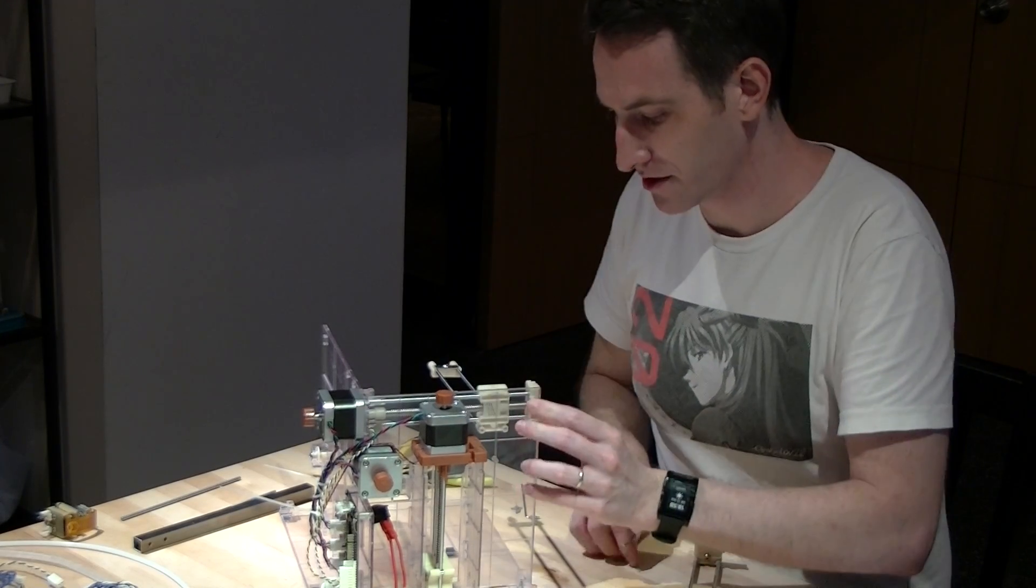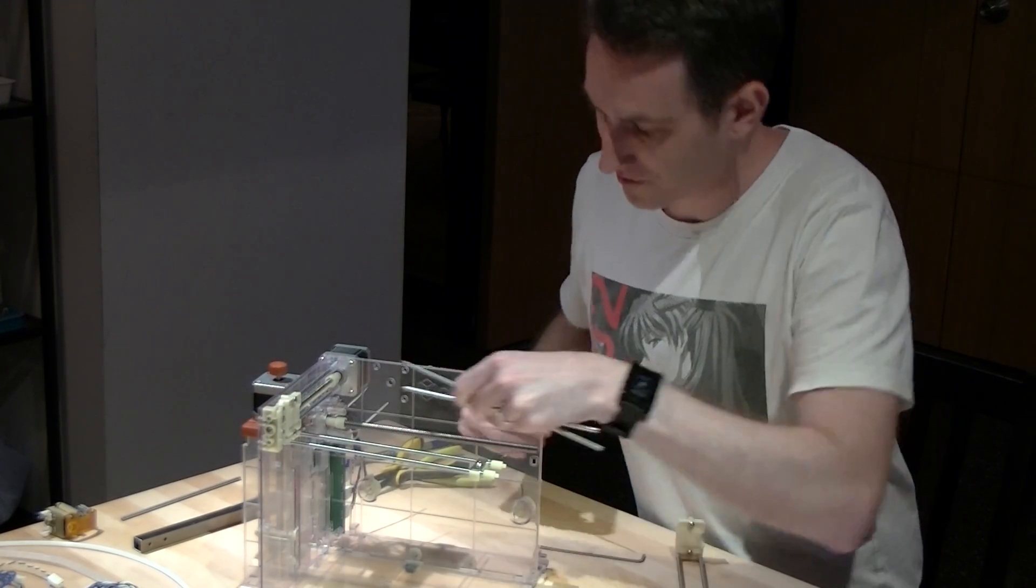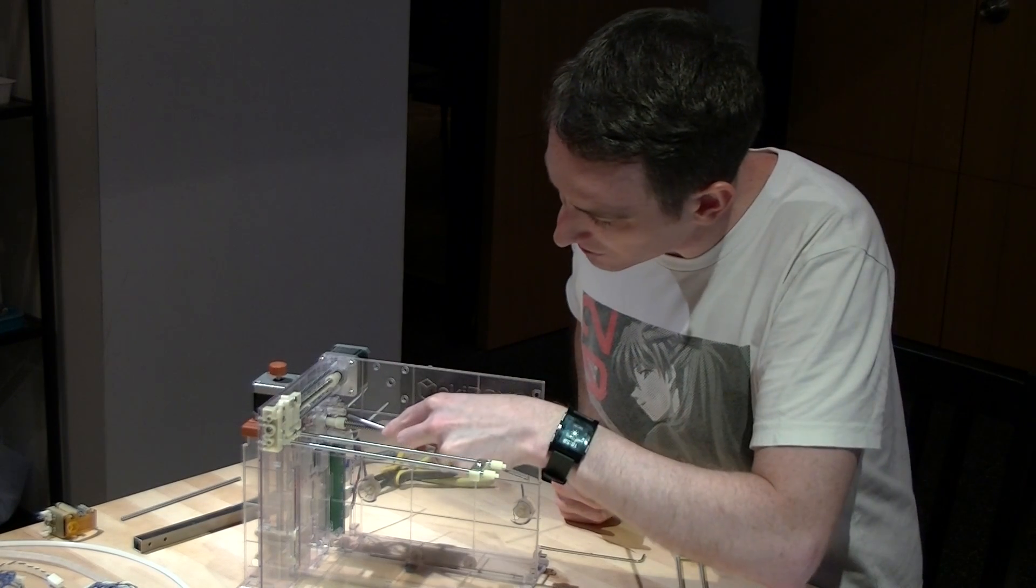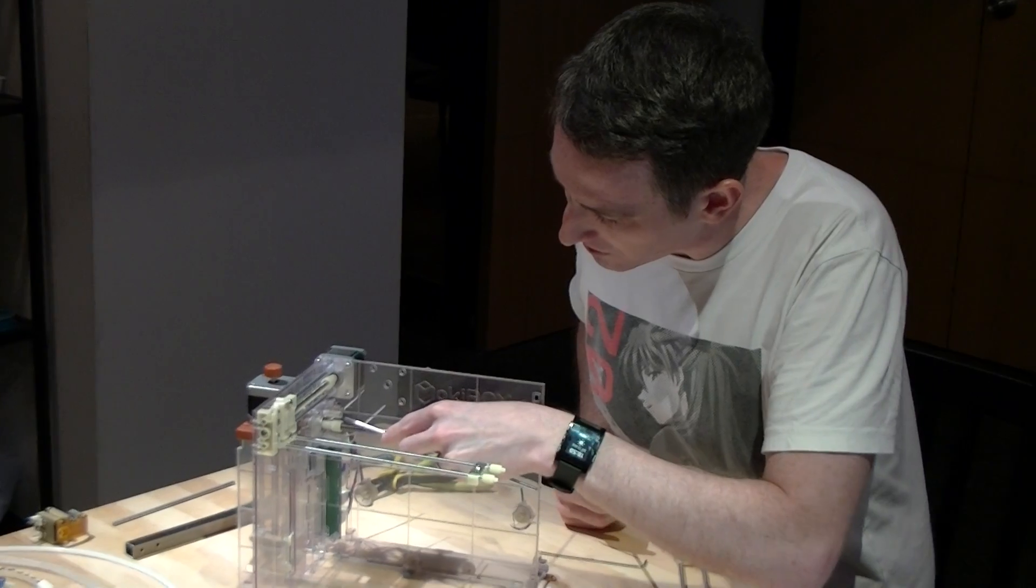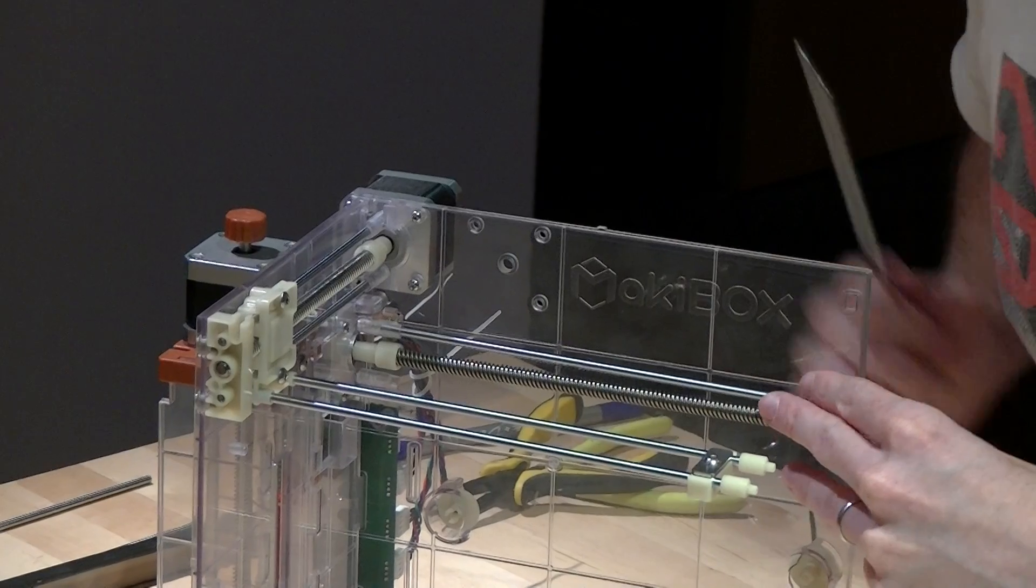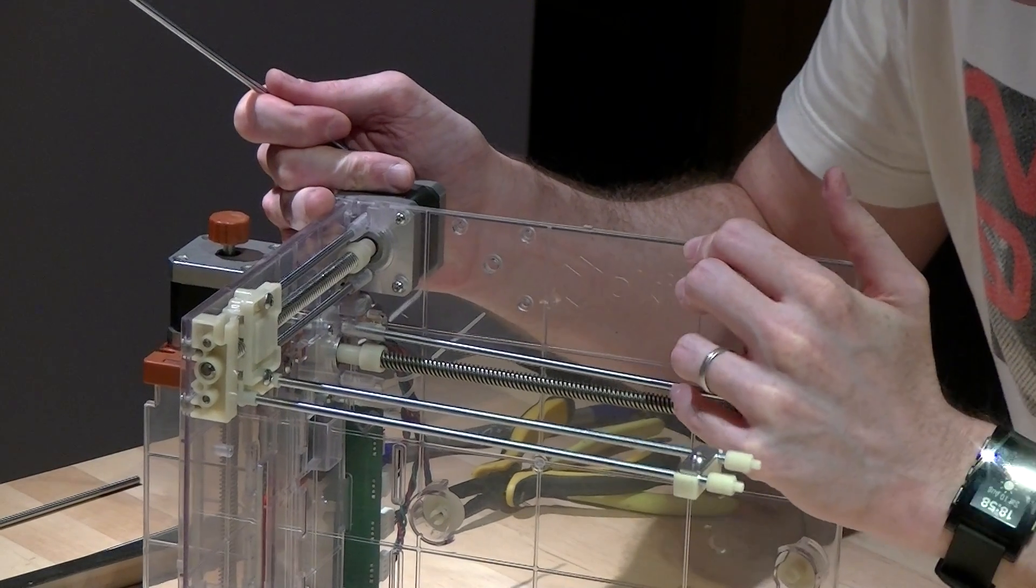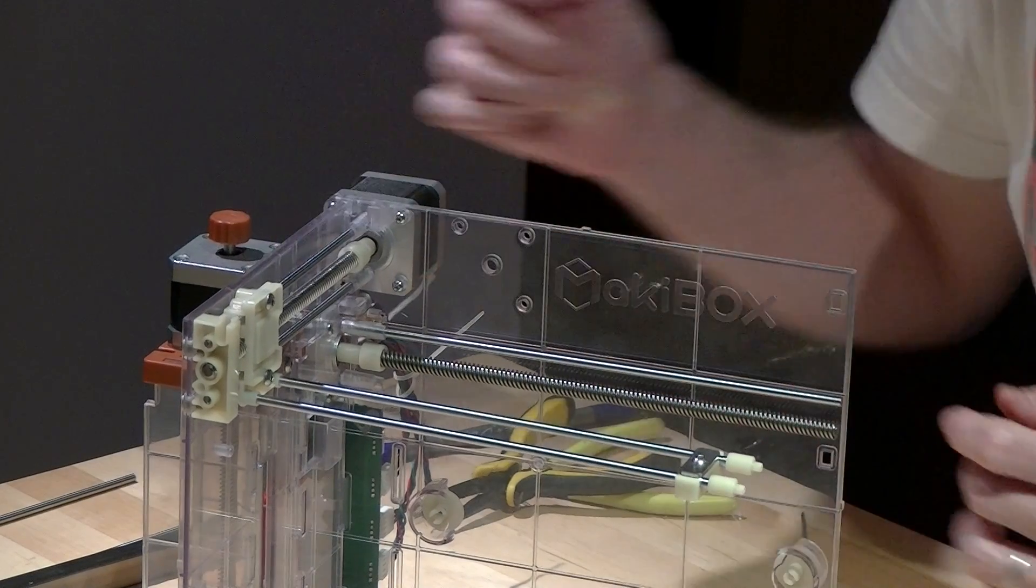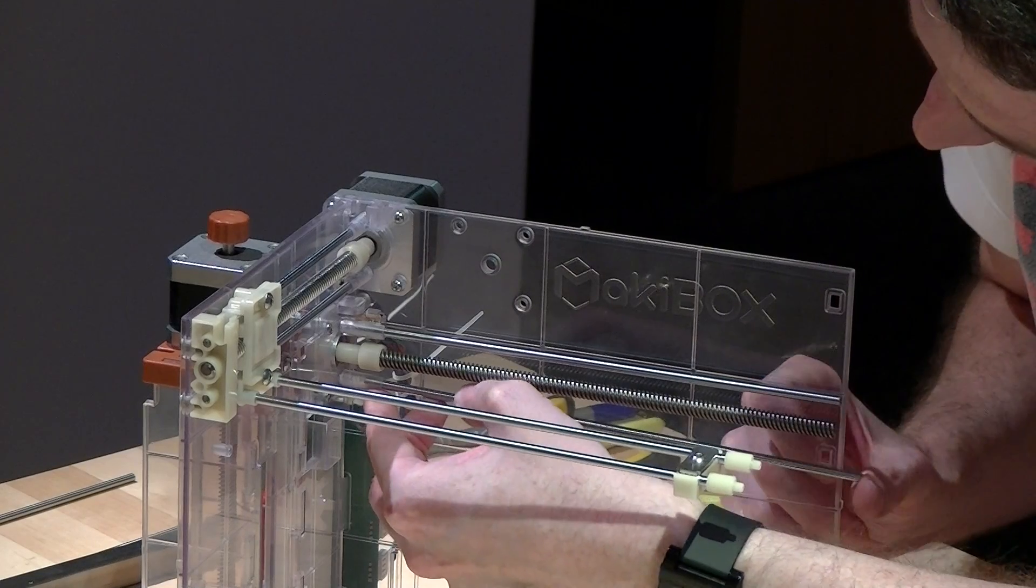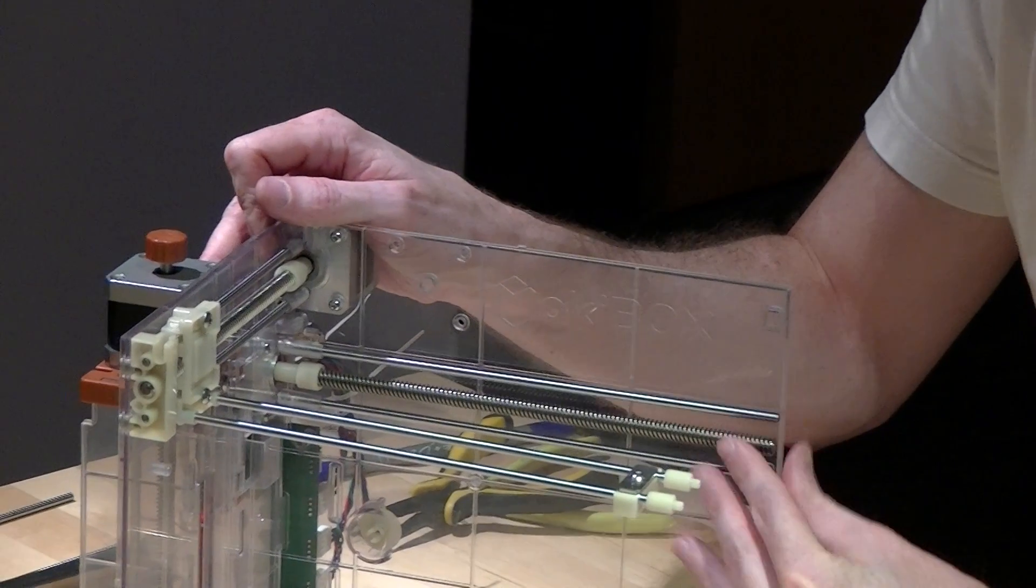Okay, and then repeat the same thing on the other axis. Two rods. Now when you're inserting these rods, be really careful of the one that has the limit switch area. Don't whack the limit plunger too hard inadvertently. This one's a little bit snugger. Get your rods in.